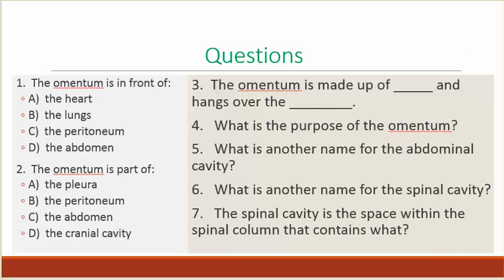Number 1. The omentum is in front of: A, the heart; B, the lungs; C, the peritoneum; D, the abdomen.